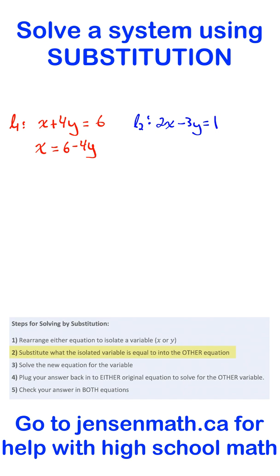Step 2 says we need to now take what the isolated variable is equal to, 6 minus 4y, and substitute it in for x into the other equation.